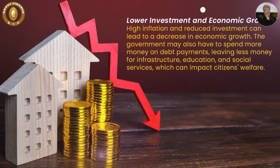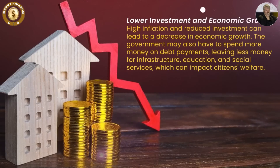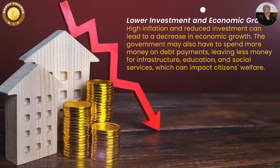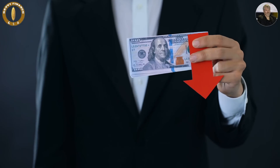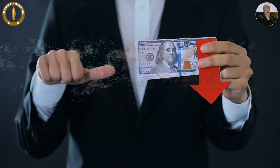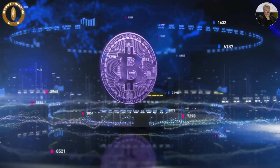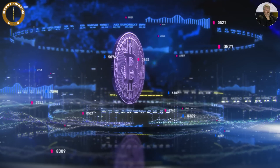Fourth, lower investment and economic growth: high inflation and reduced investment can lead to a decrease in economic growth. The government may also have to spend more money on debt payments, leaving less money for infrastructure, education, and social services, which can impact citizens' welfare. This is where Bitcoin can come in to save people from the debasement of fiat currency by the government. In this video, we will listen to Michael Saylor's argument on why Bitcoin is so important in the preservation of wealth.